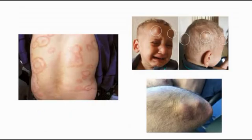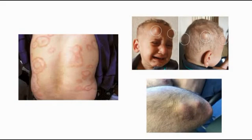This picture over here is erythema marginatum, which is a characteristic skin rash that appears mostly on the trunk and limbs. It is non-pruritic, and we can see that there are pink macules that spread outwards, where there are pink borders with a fading center. Whereas for subcutaneous nodules, they are usually found on the extensor surface of the joints, and sometimes can be seen on the scalp or spine.